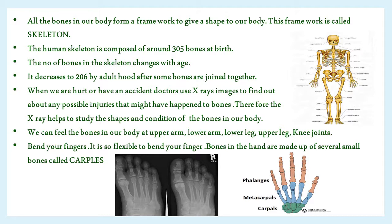How do we know the shape of a human skeleton and the shapes of the different bones in our body? One way would be to look at x-ray images of the human body. Did you or anyone in your family ever have an x-ray taken? When we are hurt or have an accident, doctors use x-ray images to find out about any possible injuries to bones. Therefore, x-rays help to study the shapes and conditions of the bones in our body.